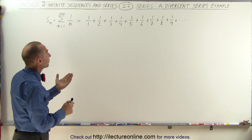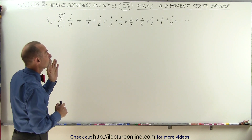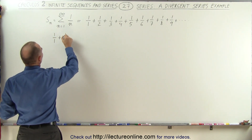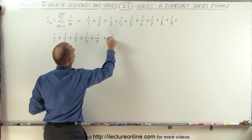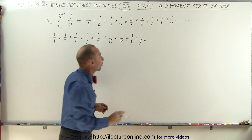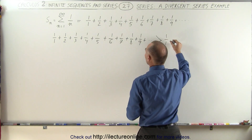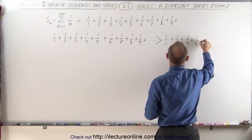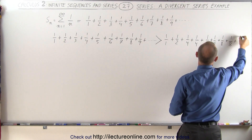What we can say is that this series will be larger than another series that we can come up with. What we're going to say is that 1 over 1 plus 1 over 2 plus 1 over 3 plus 1 over 4 plus 1 over 5 plus 1 over 6 plus 1 over 7 plus 1 over 8 plus 1 over 9, and so on to infinity, will be larger than 1 over 1 plus 1 over 2 plus 1 over 4 plus 1 over 4 plus 1 over 8 plus 1 over 8 plus 1 over 8 plus 1 over 8 plus 1 over 16, and so forth.